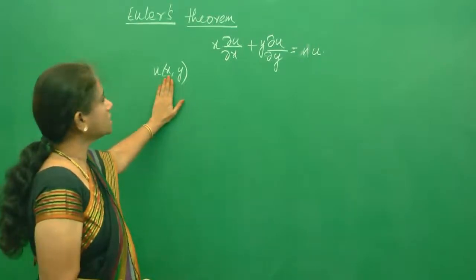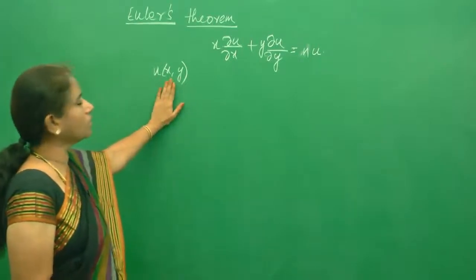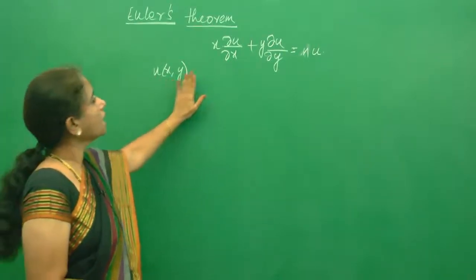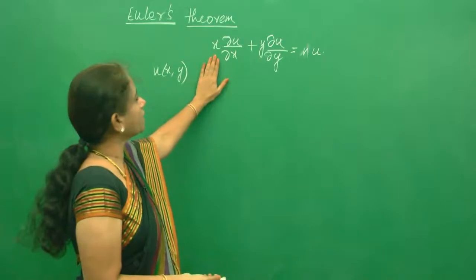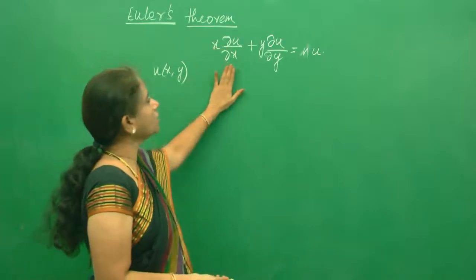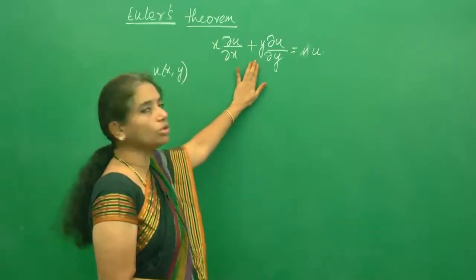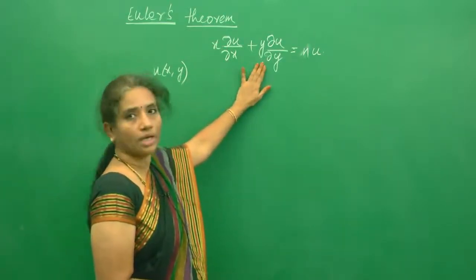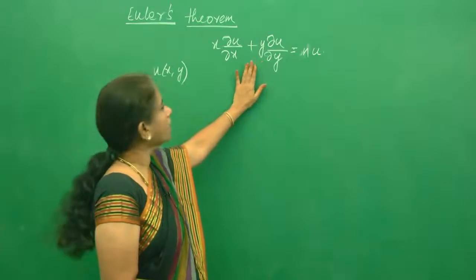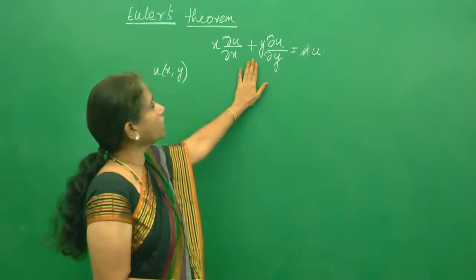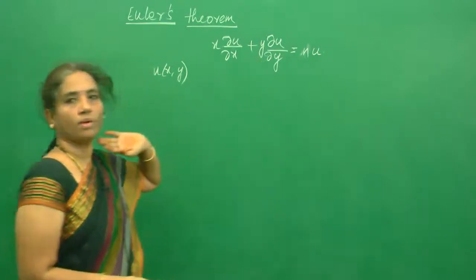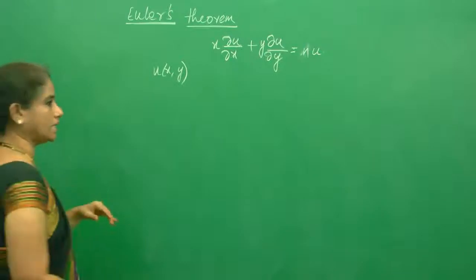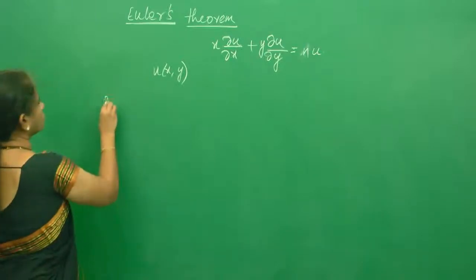When u of x, y is homogeneous, it will satisfy the rule: x into ∂u/∂x plus y into ∂u/∂y equal to nu. We are going to do one problem to prove this result or to find the result.